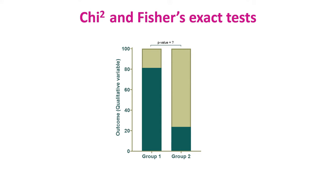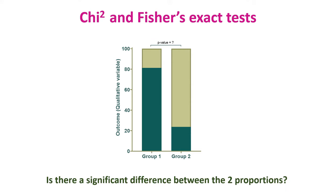In a nutshell, we use a chi-square or Fisher's exact test when we want to know if there is a significant difference between two proportions. The chi-square can actually compare more than two, but we will not talk about it in this video.